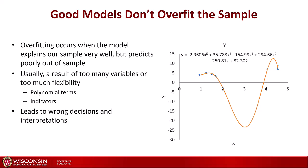Overfitting is usually the result of too many variables or too much flexibility. Here we still have just one explanatory variable, but we have a lot of flexibility because we include x, x-squared, x-cubed, and so on — polynomial terms are very dangerous for that. Other things like interaction terms and indicator variables all add flexibility but might lead to wrong predictions.